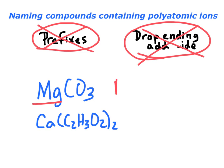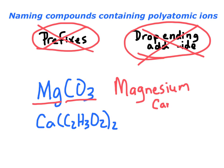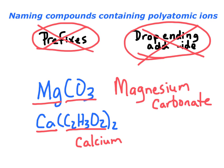For example, MgCO3 — you say the name of the metal, which is magnesium, and then CO3 from the back of your periodic table is carbonate. So this is magnesium carbonate. For the next one, Ca(C2H3O2)2 — this is calcium. We look in the parentheses: C2H3O2. Looking up that exact formula on the back of the periodic table, that is the acetate ion. So this is just calcium acetate. Very easy to name these compounds.